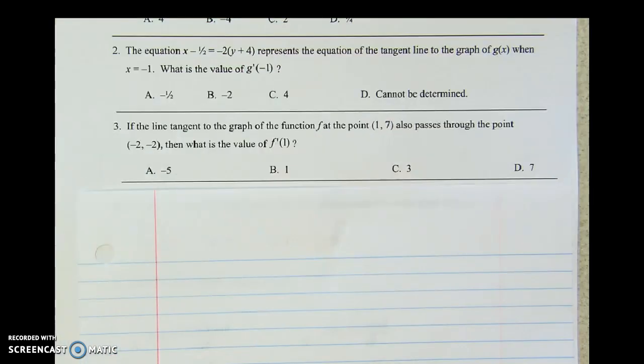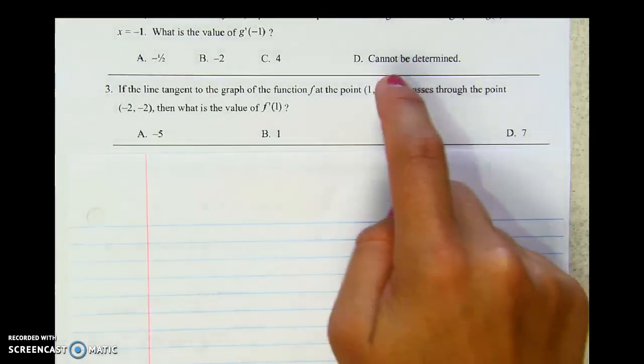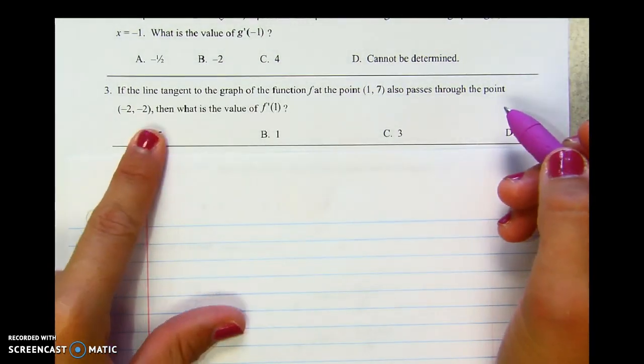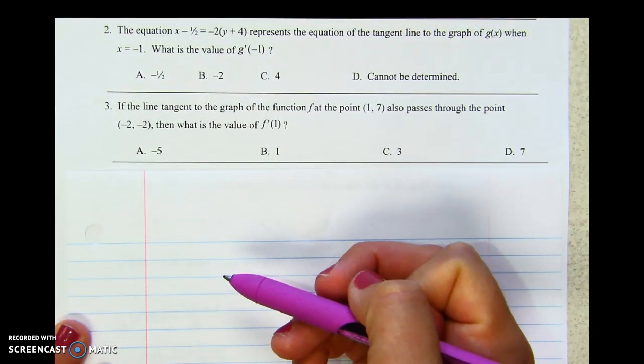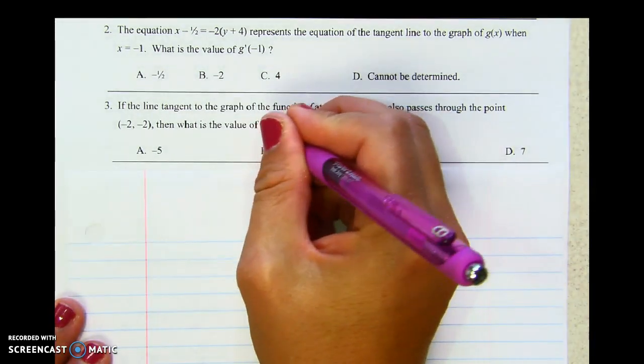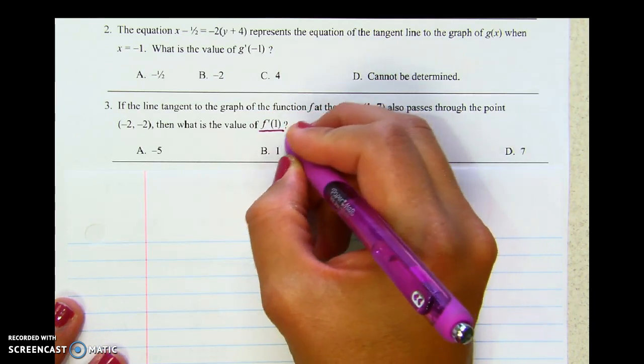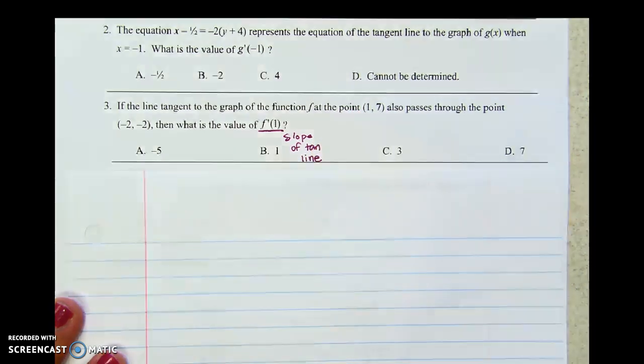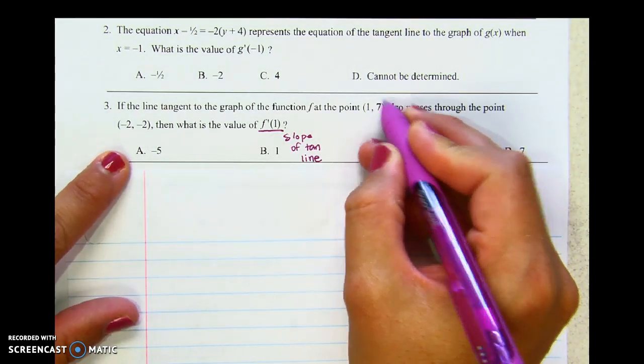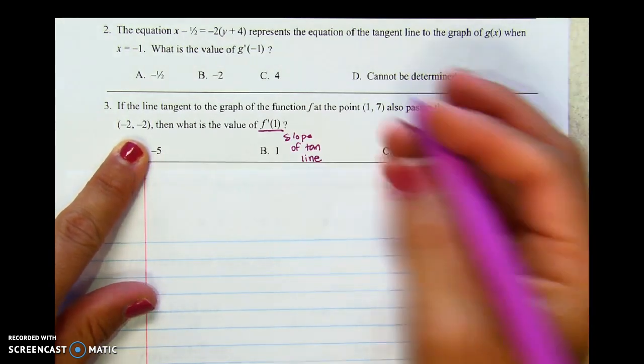Here we go. Read number three. Alright, number three. The line tangent to the graph of f at the point one seven also passes through this point. What is the value of this? Again, just like before, what did we claim the value of g prime of negative one? Slope of the tangent line? What's this going to be then? Slope of the tangent line. Slope of tan line. I just said um, I'm trying to not say um. So if it goes through this point and it goes through that point, we need to find the slope of the tangent line. Yes. So how do we do that?